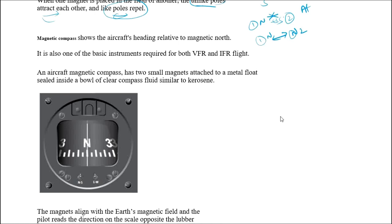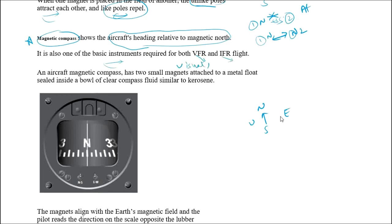You may have heard about the magnetic compass, which is used to find directions like north, south, east, and west. A basic magnetic compass shows alignment with respect to north, whereas in an aircraft, the magnetic compass shows the aircraft's heading relative to magnetic north. It is one of the basic instruments required for both VFR (Visual Flight Rules) and IFR (Instrument Flight Rules). In an aircraft, the magnetic compass consists of two small magnets attached to a metal float sealed inside a bowl of clear compass fluid, similar to kerosene.